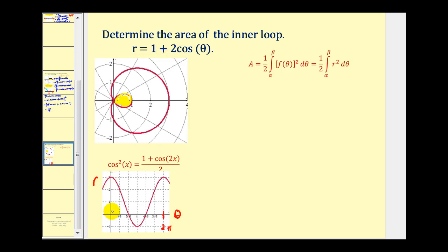Taking a look at this graph, we can determine when theta is equal to zero, r is equal to three, which would be this point here on the polar curve. Notice between zero and two pi over three radians, the radius decreases to zero, which would correspond to this piece of the polar curve. And then at this point, it starts to trace out the inner loop of this curve.